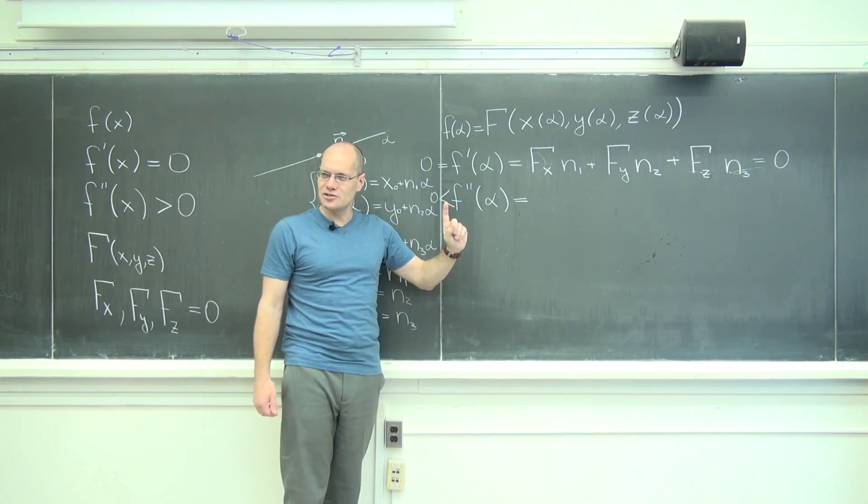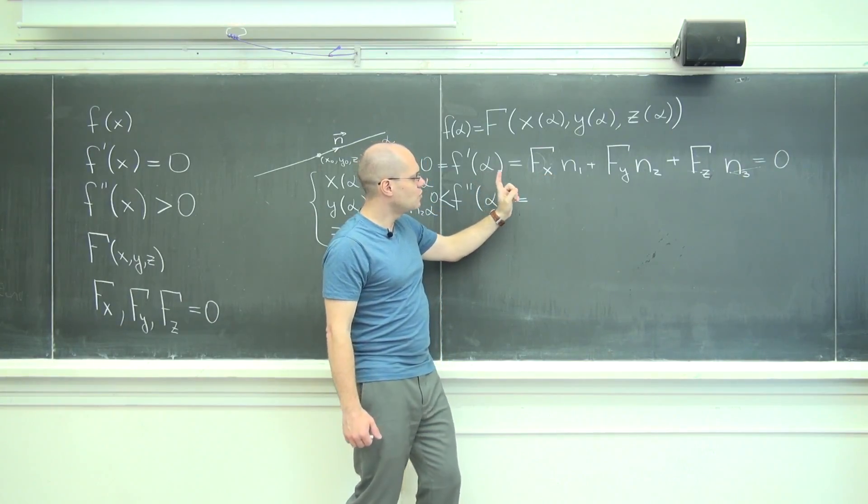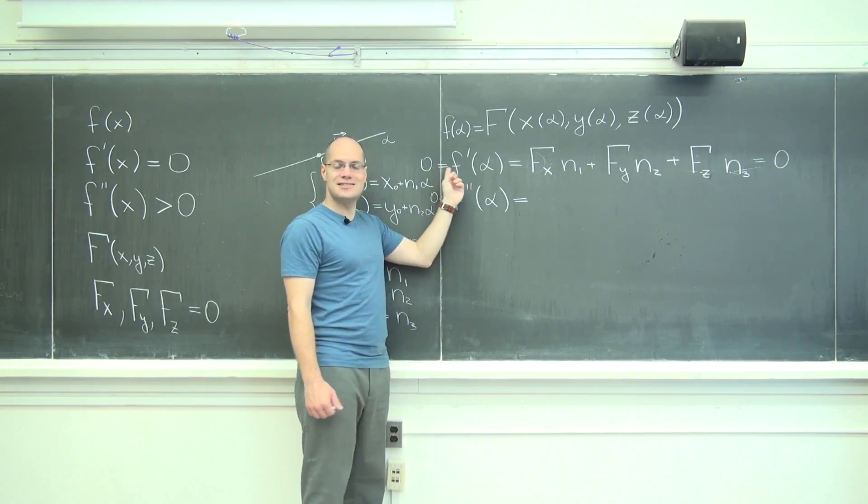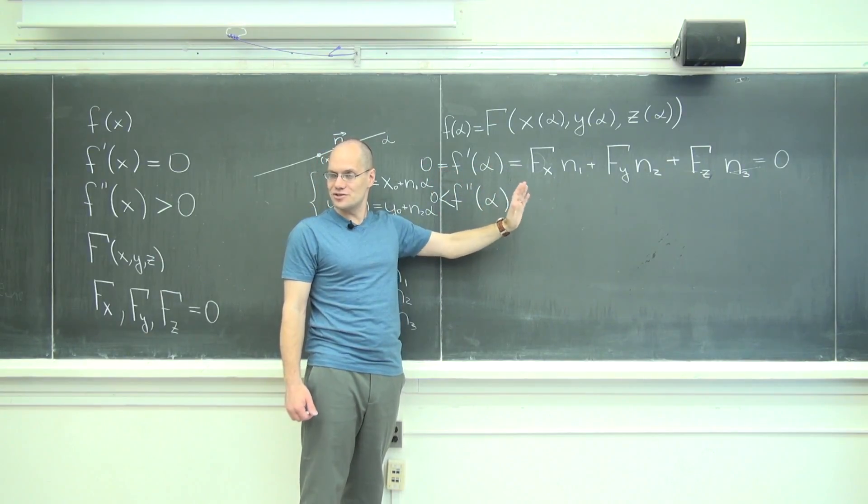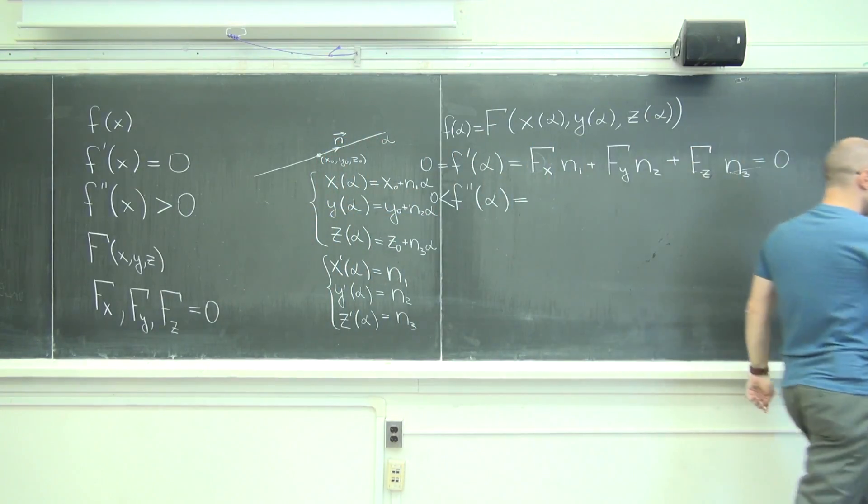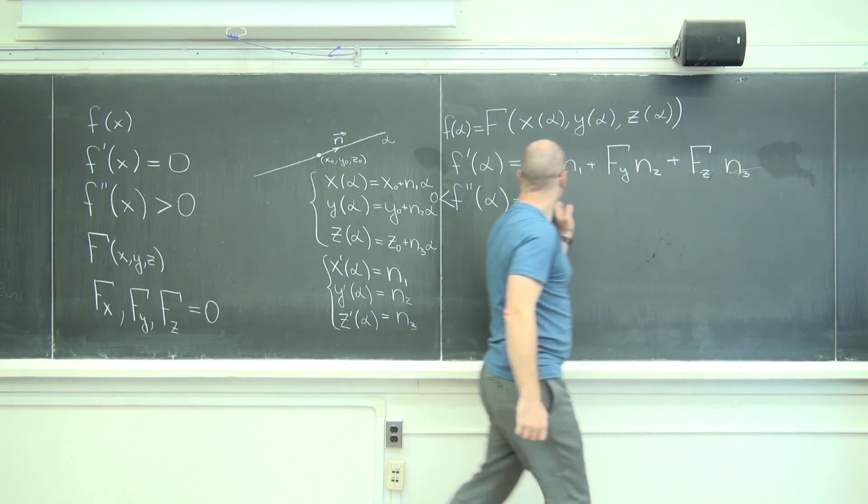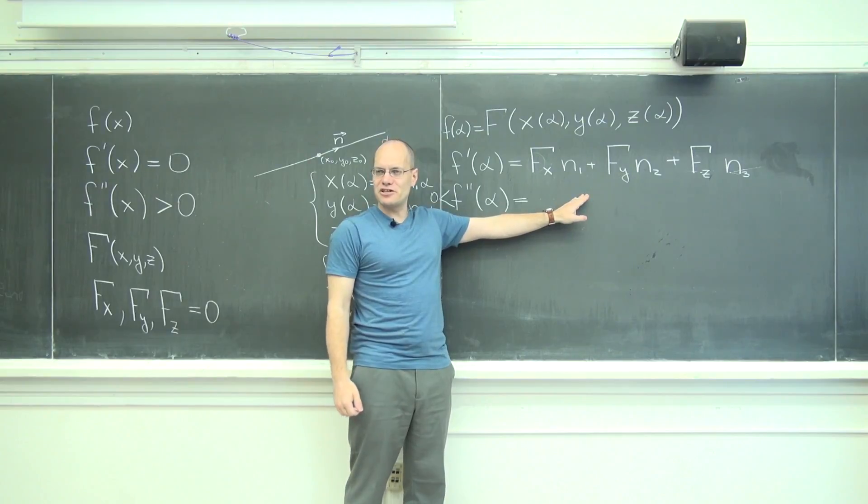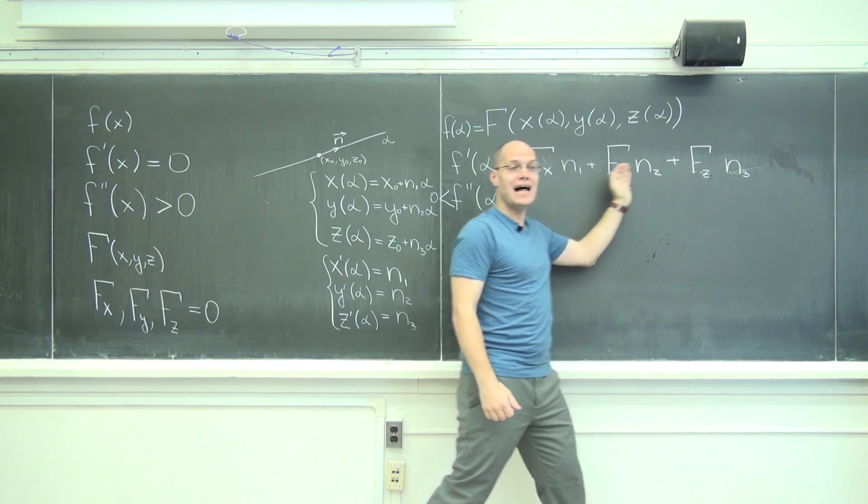Okay, before we take a second derivative, let's take stock of what this expression is. So what I will do now is erase this equals to zero because we're in the going for the second derivative, so it's not that it equals to zero. This is the expression for the derivative. This is still a function of alpha.